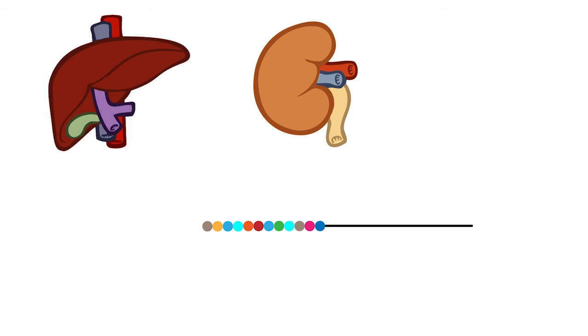Angiotensin-2 is initially derived from the 453 amino acid protein called angiotensinogen, which is constitutively secreted by the liver. Next, renin, an enzyme secreted by the granular cells within the kidney, cleaves the first 12 amino acids from the rest of the angiotensinogen protein. This 12 amino acid peptide is now referred to as angiotensin-1.